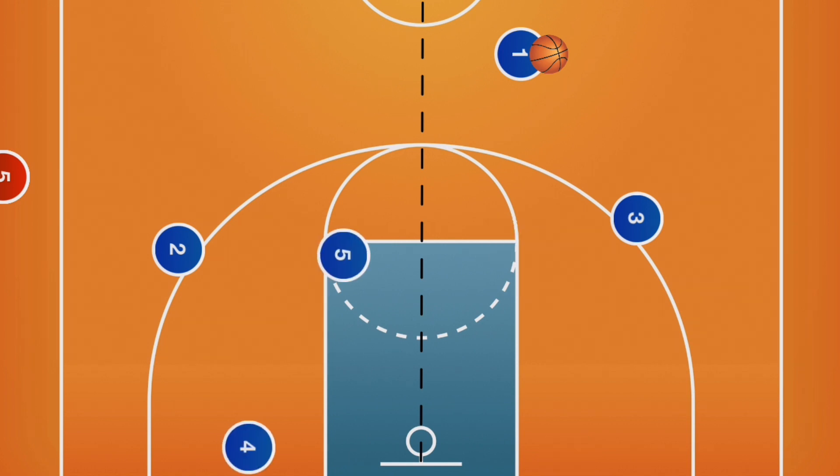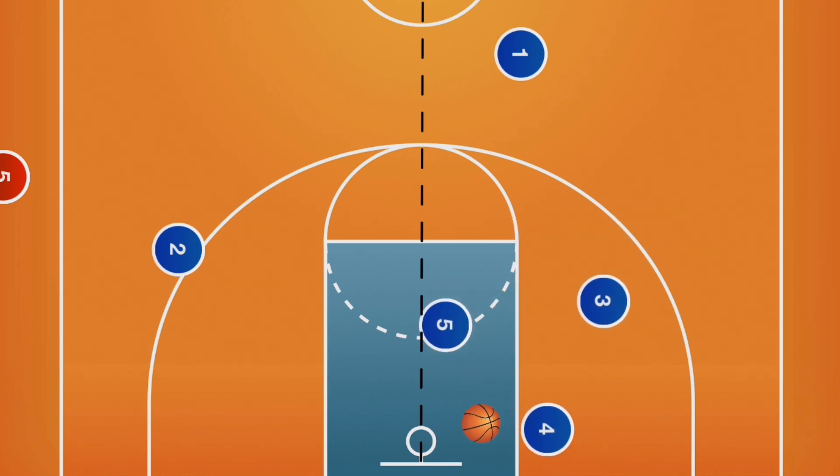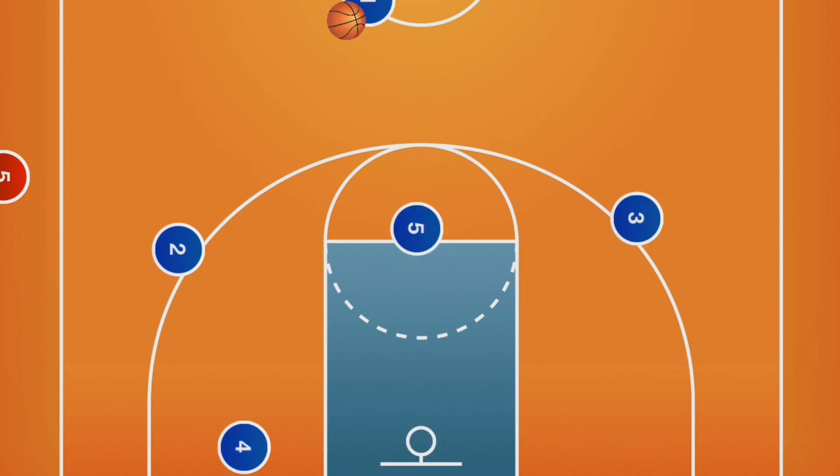When the ball switches sides, players 4 and 5 will follow the ball. The high post will flash to the other elbow, and the short corner will run behind the defense to the other short corner. Here is what it may look like all the way through.